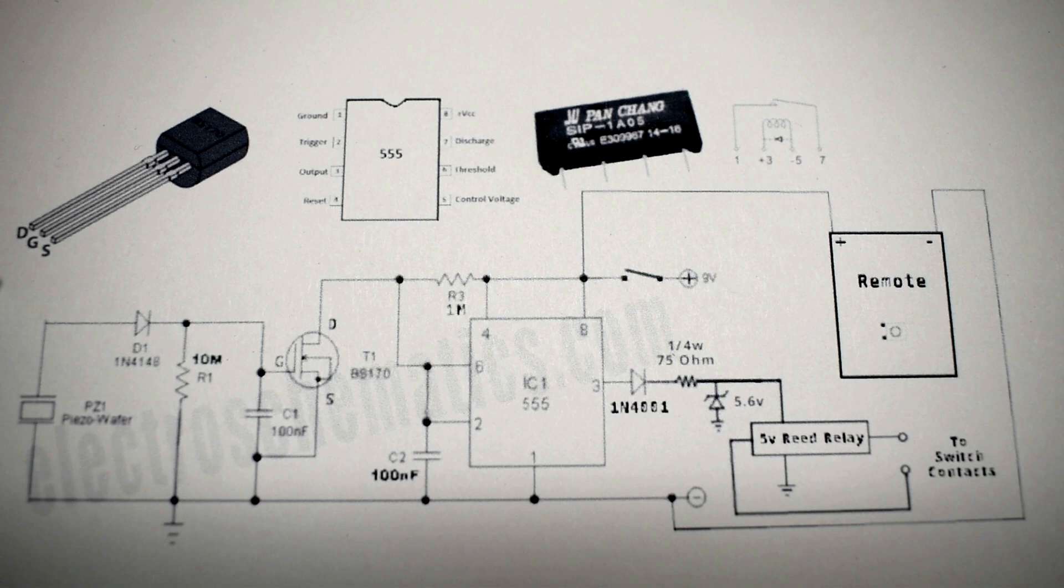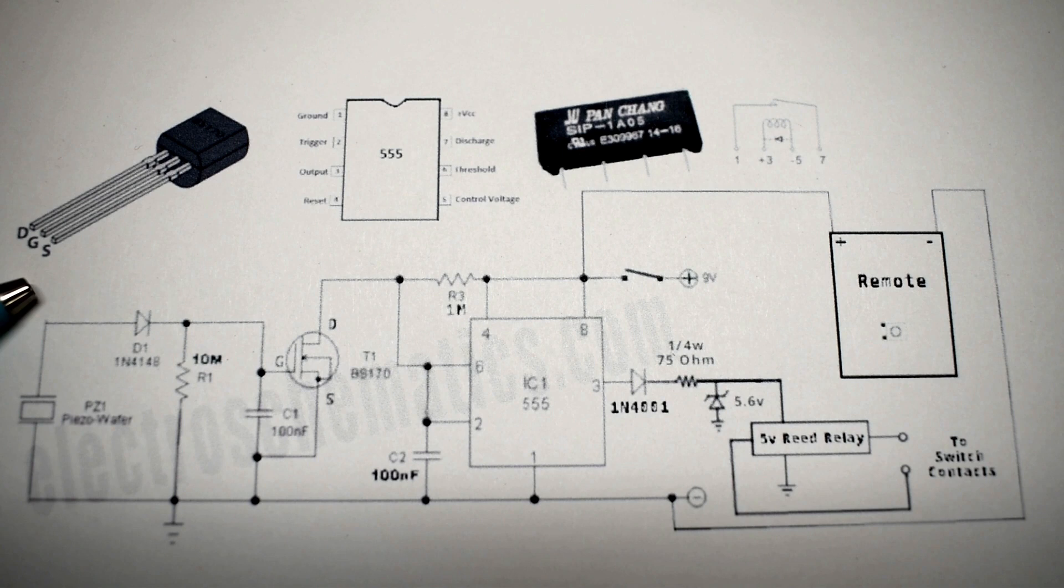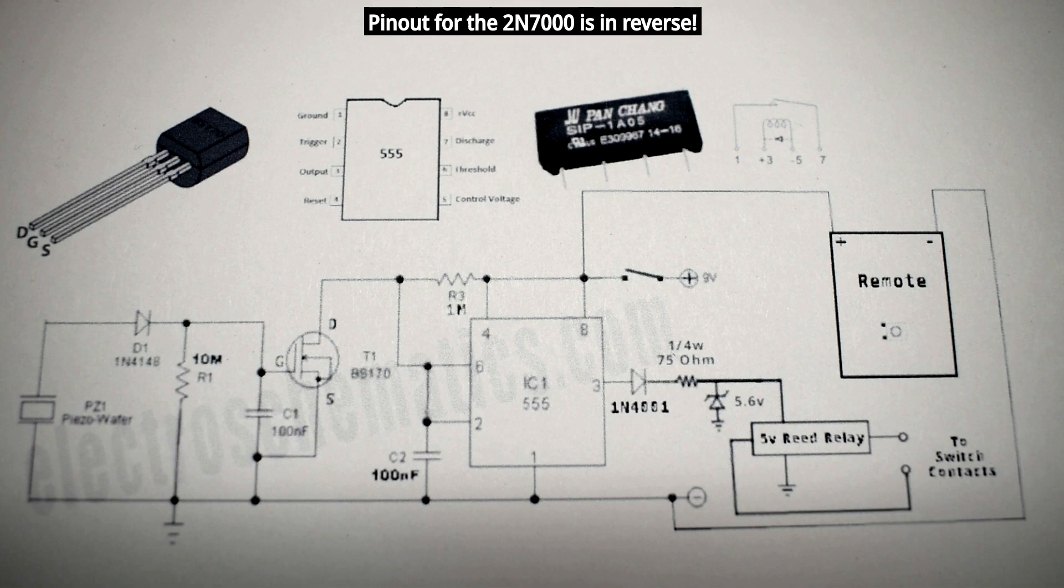If you're having trouble seeing the schematic clearly, don't worry about it. I placed links in the video description area to the transmitter and receiver schematics. You'll be able to view everything up close and print them if desired. For the pinout on the BS-170, it's drain on the left, source on the right, gate in the middle, and you can see the flat surface on top.